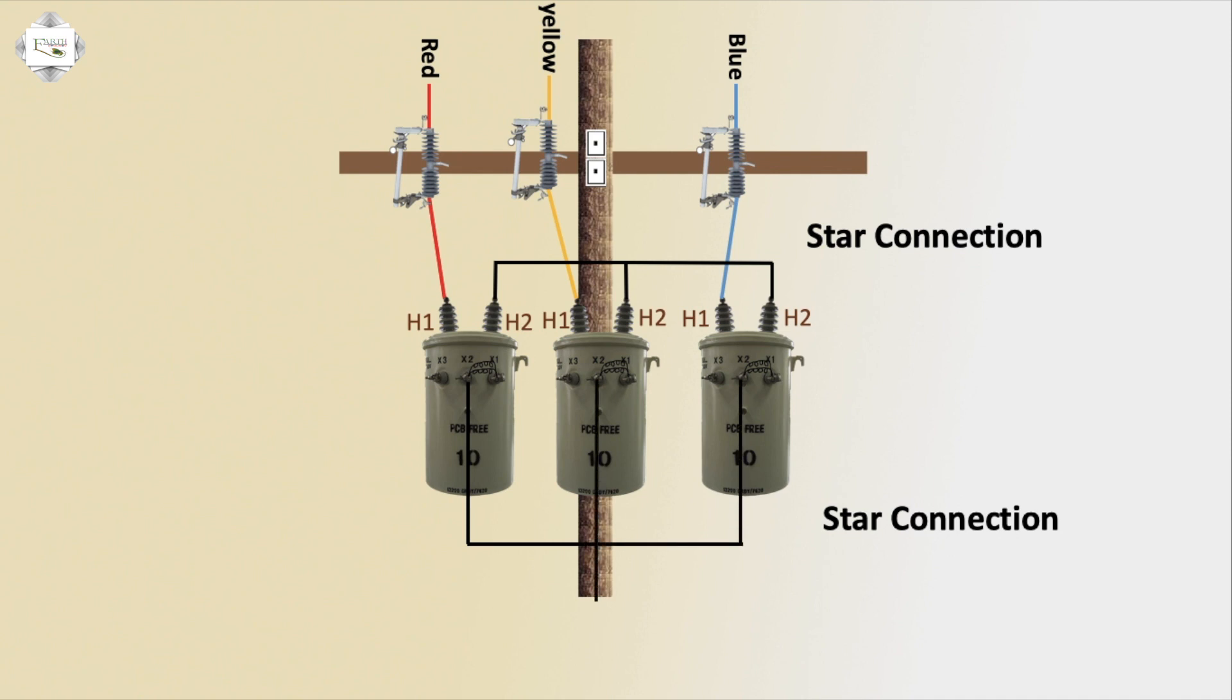Transformer X2 X2 X2 connection short neutral, or X1 phase red outgoing, or blue outgoing, yellow outgoing phase. Second or blue is third phase connection.